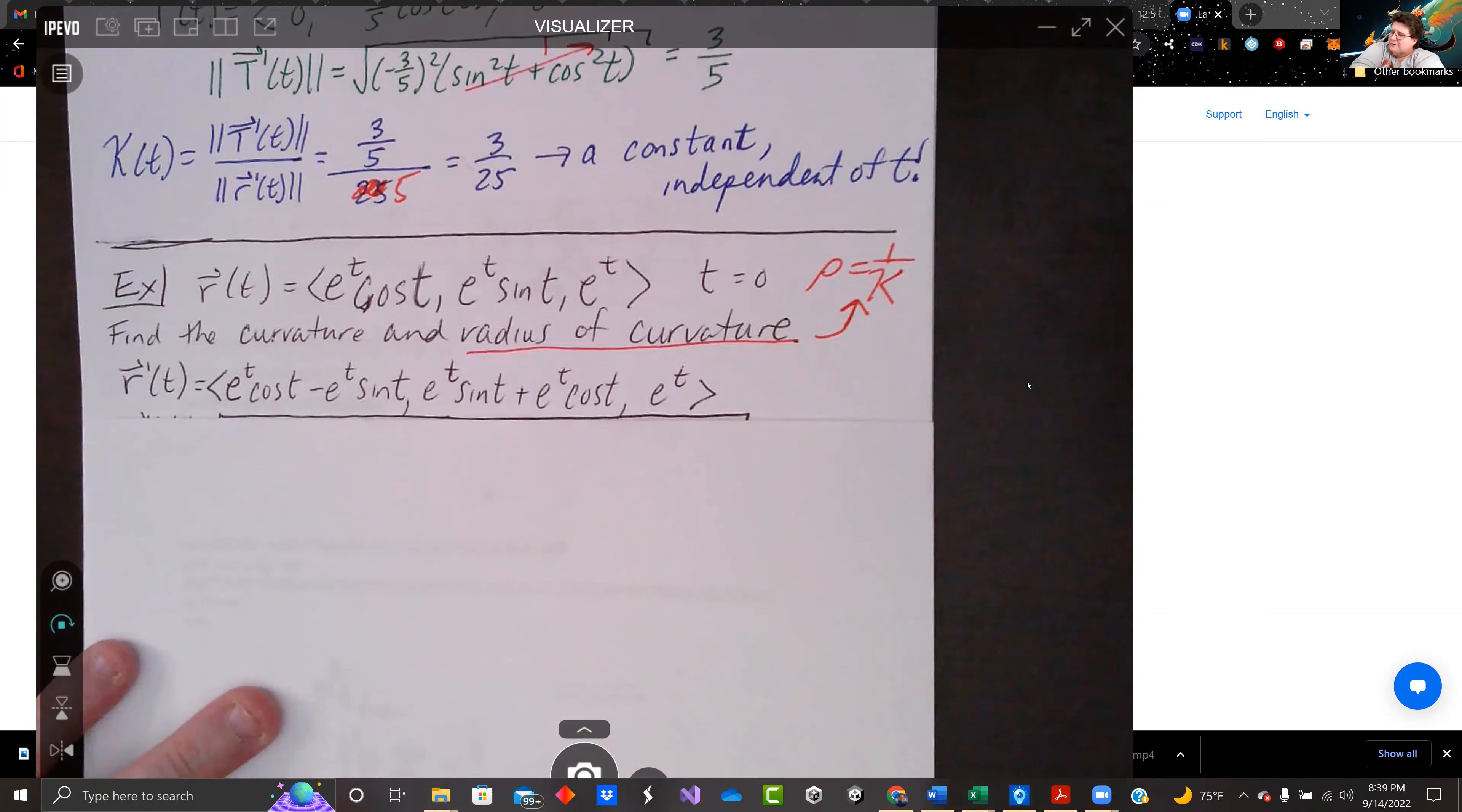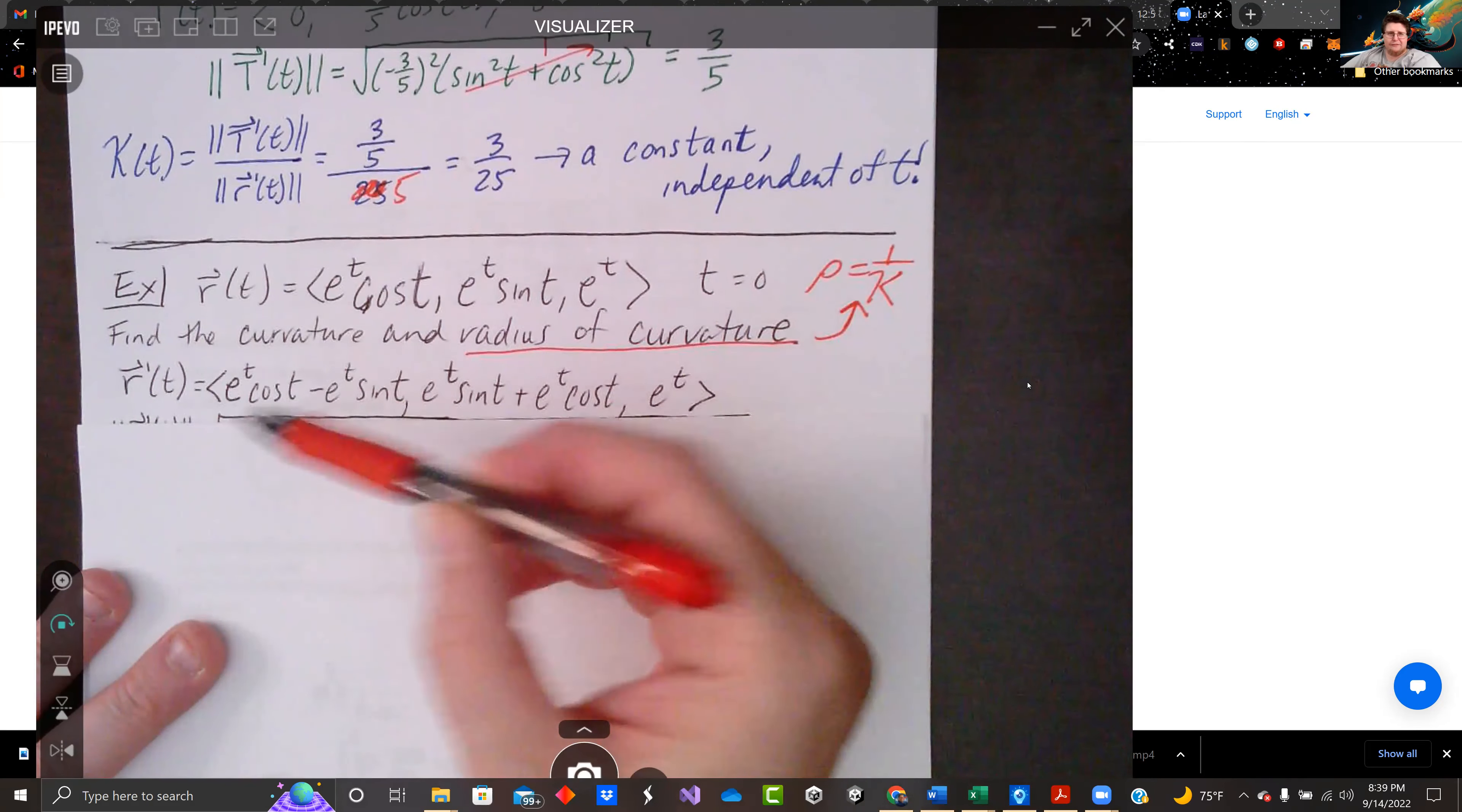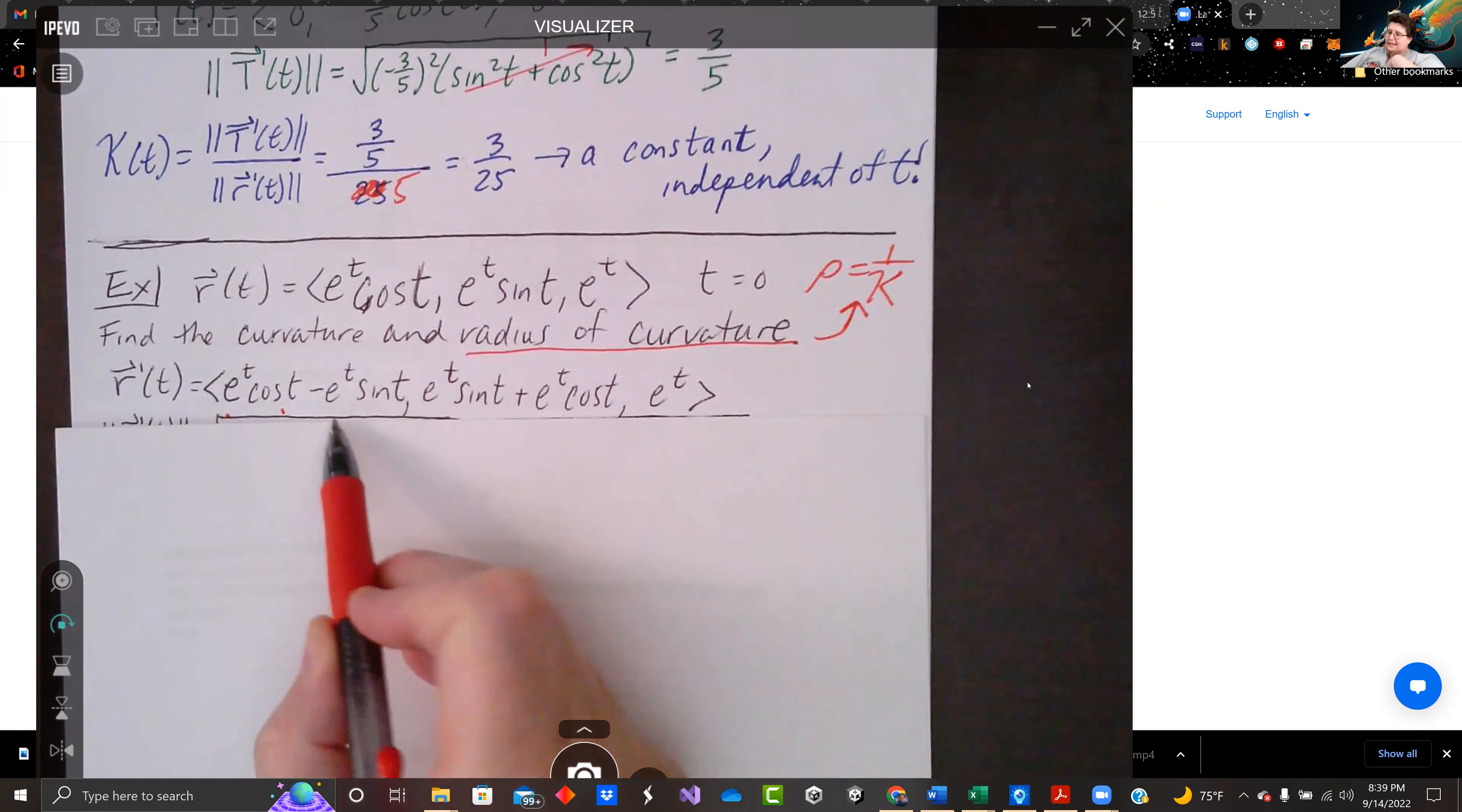All right. So let's take the derivative. We've got a product, so we've got to do the product rule. I will do this every time. Derivative of the first, then the derivative of the second. So I took the derivative of e to the t. Cosine t stayed the same. Then I took the left e to the t and took the derivative of cosine, and we get negative sine. So that's my x component.